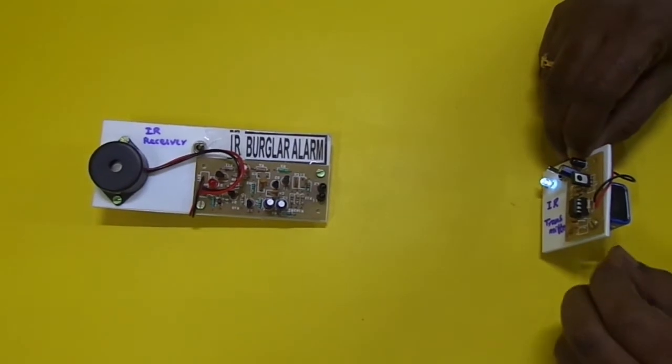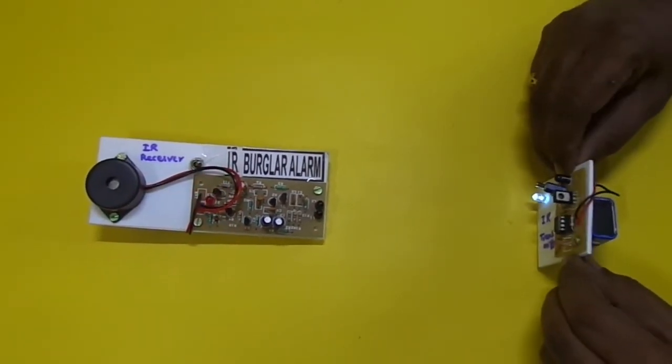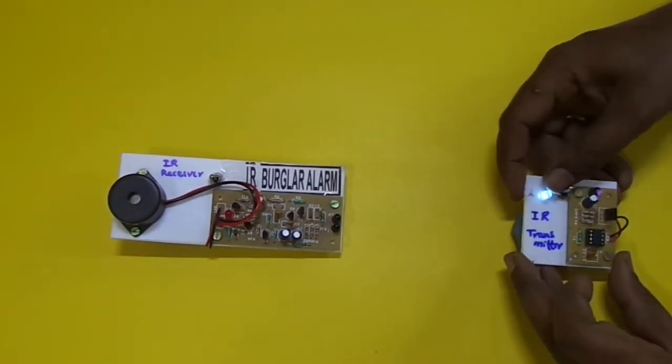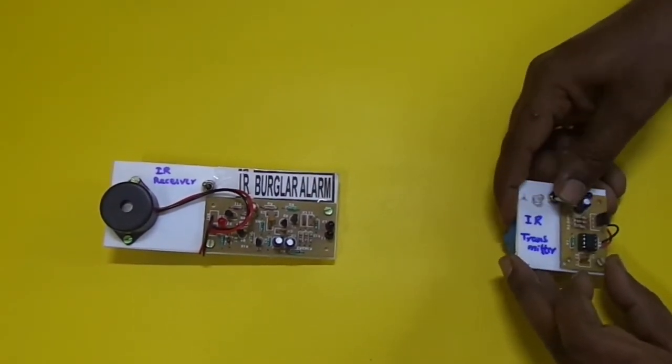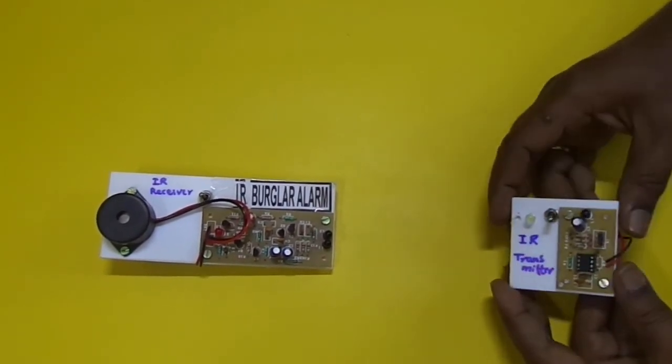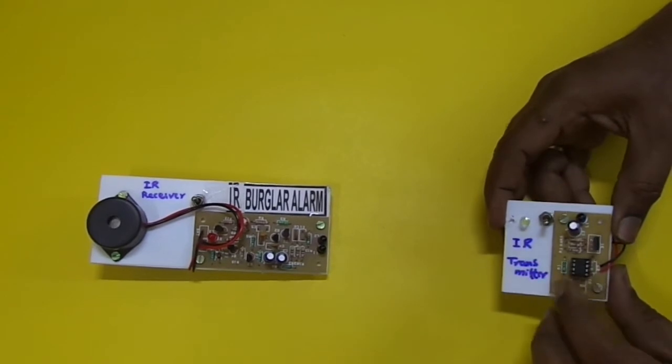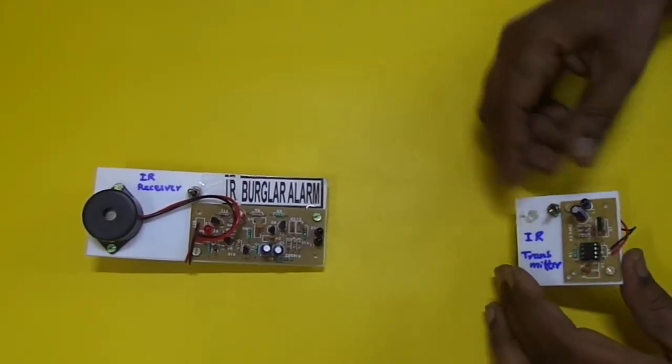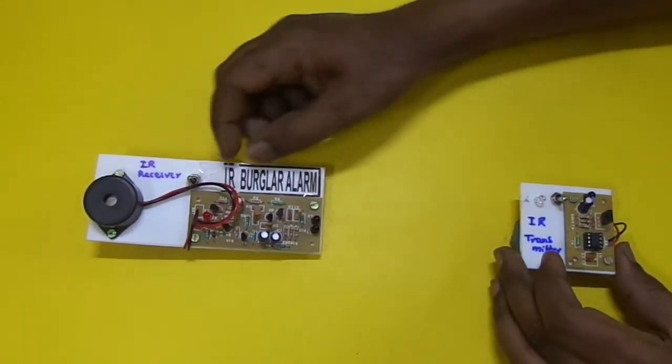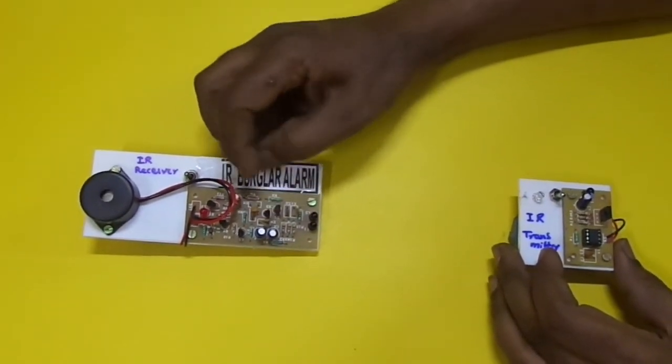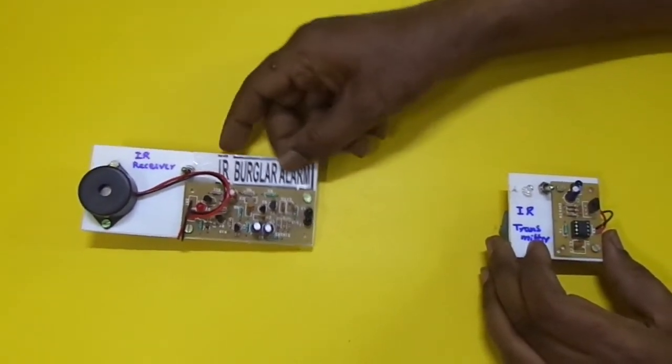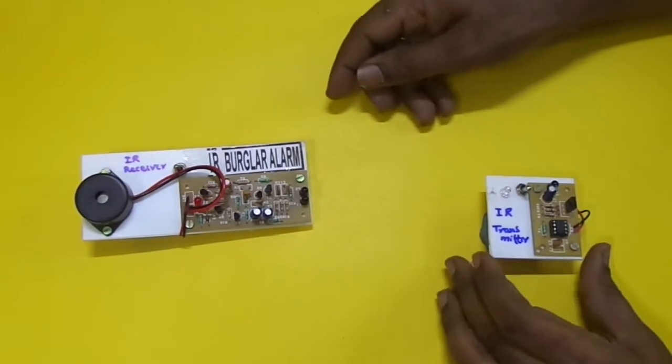The main components - this IR transmitter is having IC555 and a power transistor which modulates the IR rays with a 38 kilohertz frequency. These modulated IR signals are received by this IR receiver, causing transistor switching, and the IR signals switch on the buzzer. This is the simple working of the IR burglar alarm.